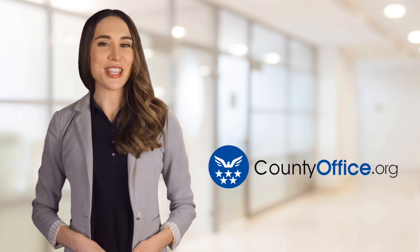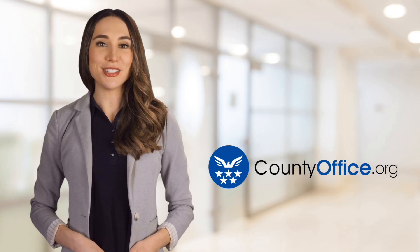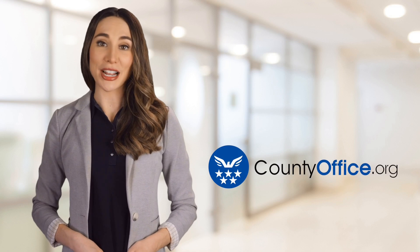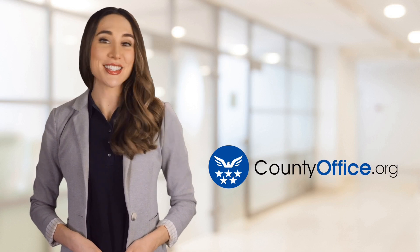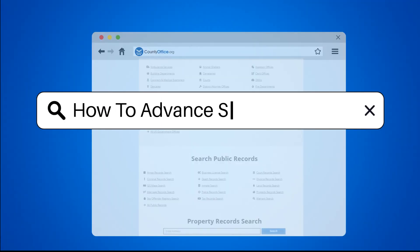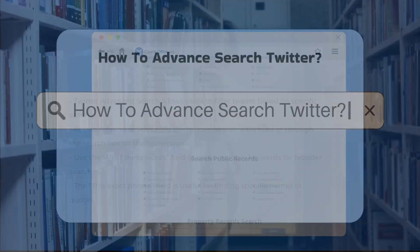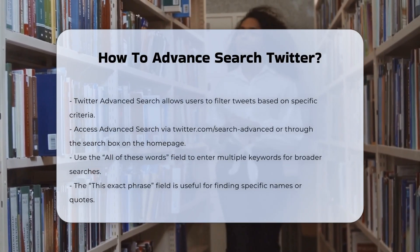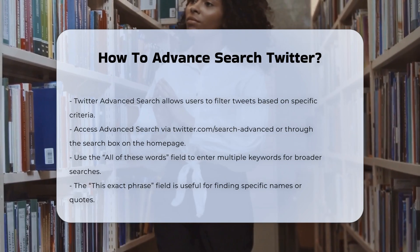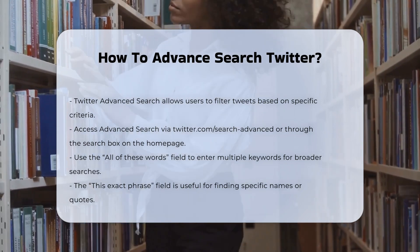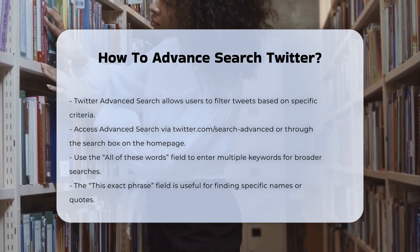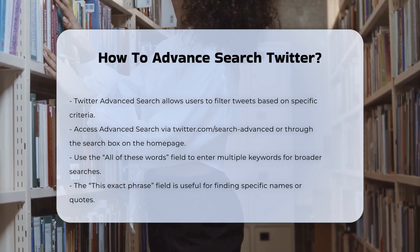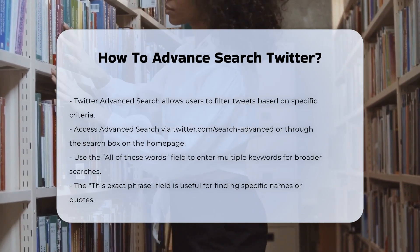Welcome to County Office, your ultimate guide to local government services and public records. Let's get started. How to advance search Twitter. Twitter advanced search is a powerful tool that allows users to filter tweets based on highly specific criteria, making it easier to find relevant and useful information amidst the vast number of tweets posted daily.